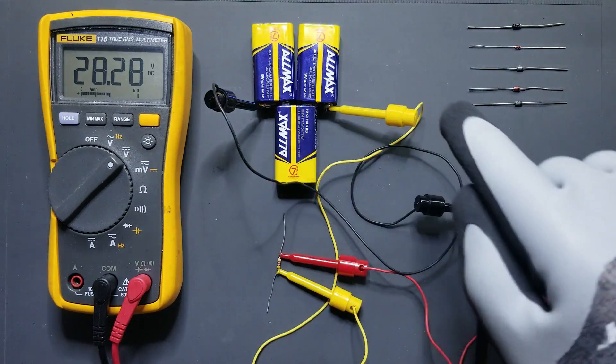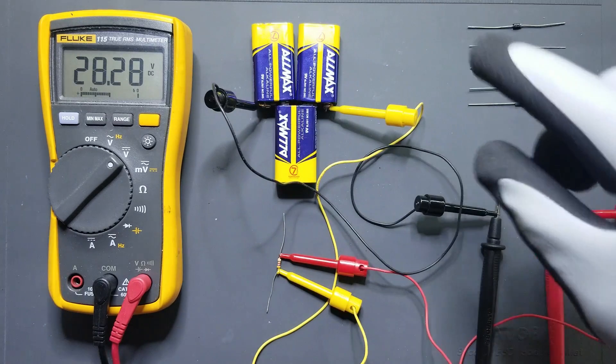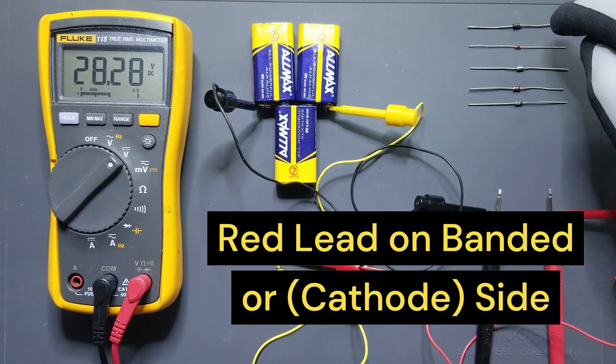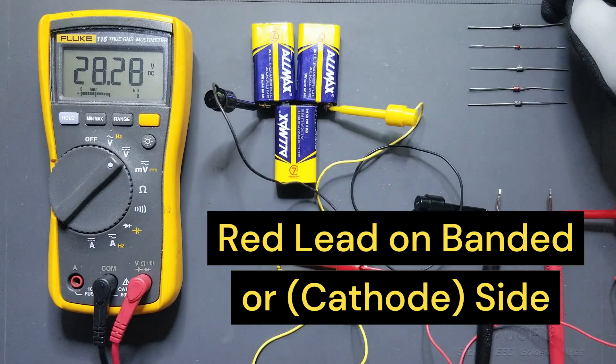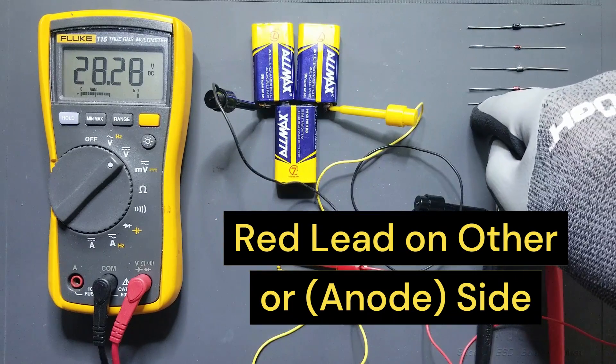So contrary to standard diodes, testing Zeners requires you to put your red lead on the banded or cathode side and the black lead on the other side of the diode.